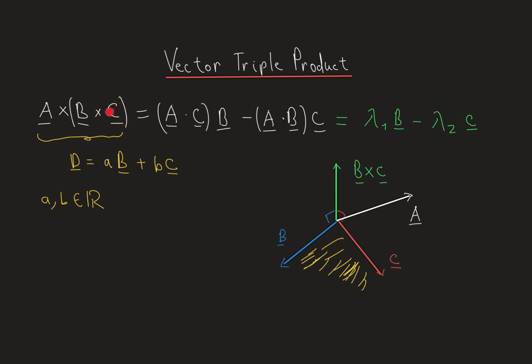We subtract from that the other vector c — the last vector — and vector c is multiplied by the dot product of the remaining vectors a and b.